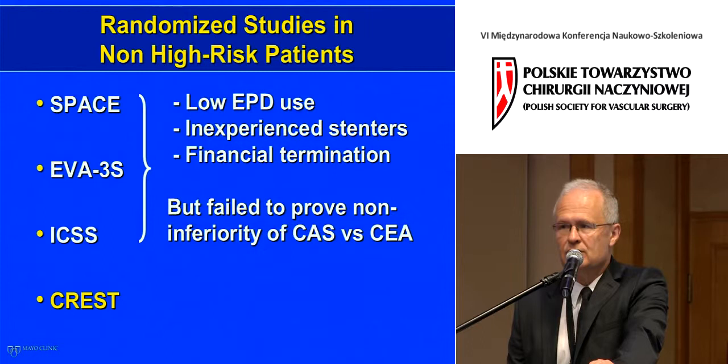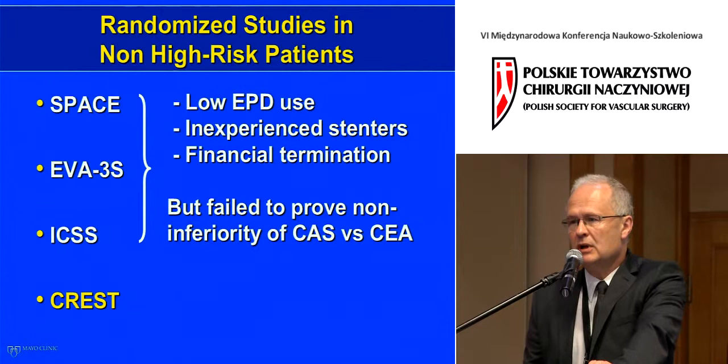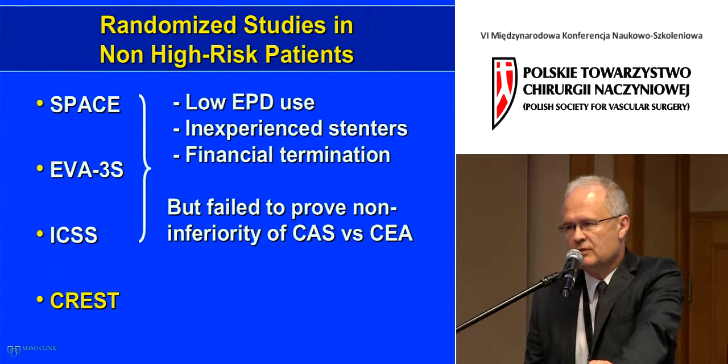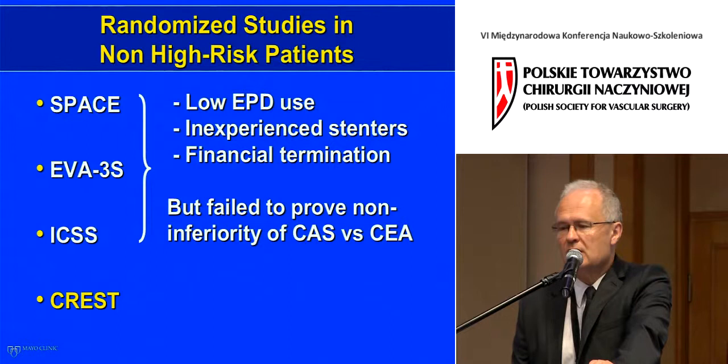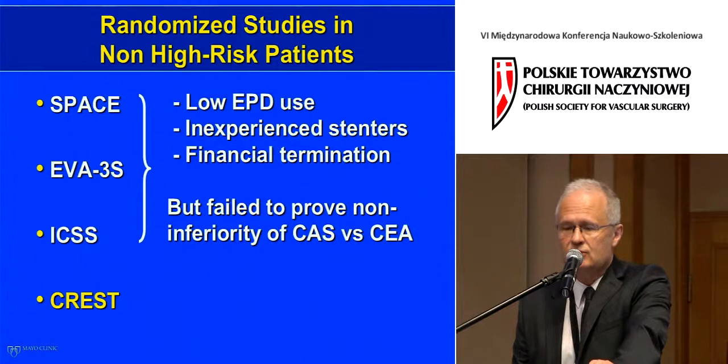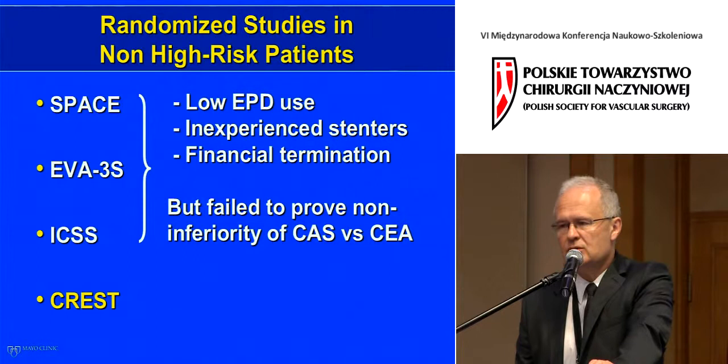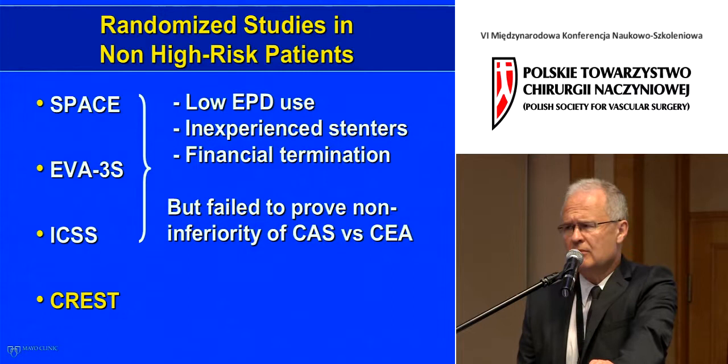Several other trials have significant limitations. Many did not use embolic protection devices, and operators performing carotid stenting were often inexperienced — one study showed that only slightly over 11% of interventionalists doing carotid stenting performed more than 12 procedures per year. Some studies had financial issues and were stopped prematurely. The ICSS trial, probably the largest at 1,700 patients, only listed embolic protection as a suggestion rather than a requirement.